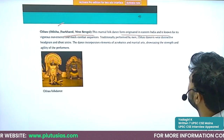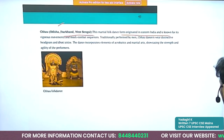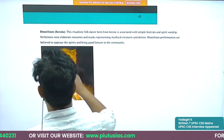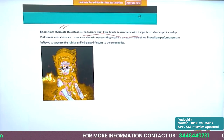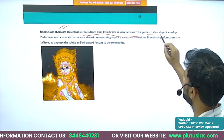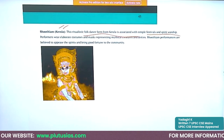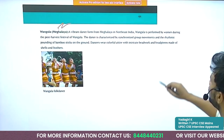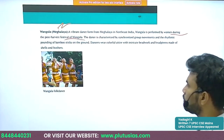Chhau is a martial folk dance originating in Eastern India, known for its vigorous movements with a background in martial arts. Theyyam is associated with Kerala — it is a ritualistic folk dance associated with temple festivals and spirit worship. Vangala belongs to Meghalaya — it is performed by women during the post-harvest Vangala festival.